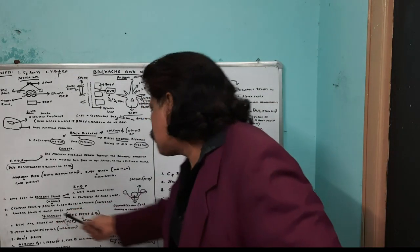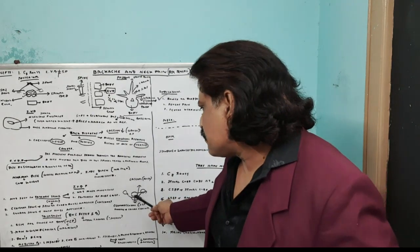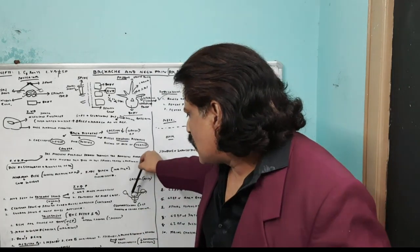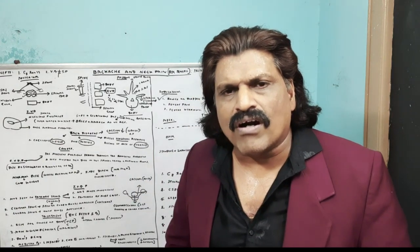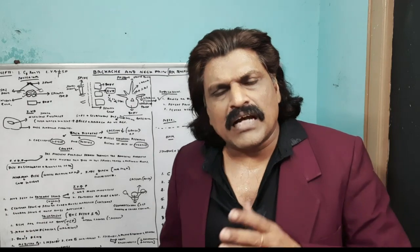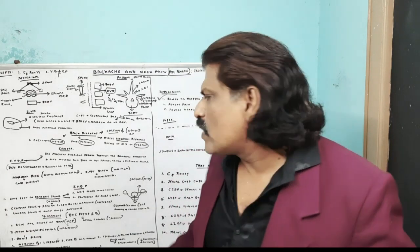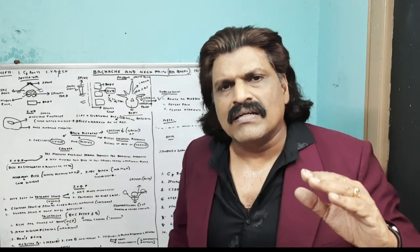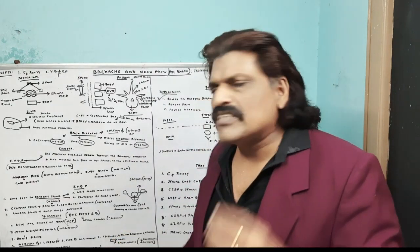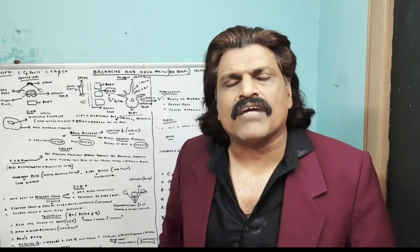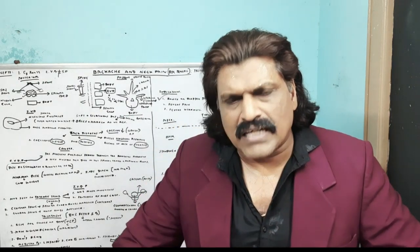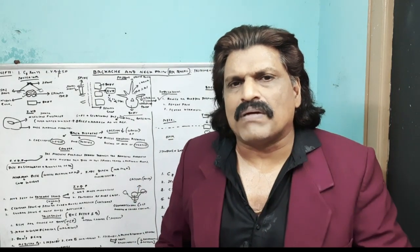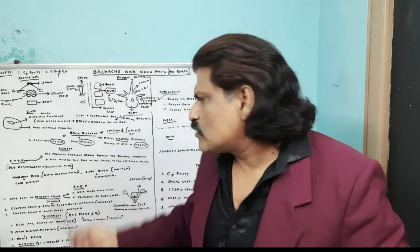In cervical disc prolapse, lateral impingement causes cervical radiculopathy; central impingement causes myelopathy; posterolateral or centrolateral causes myeloradiculopathy. In lumbar disc prolapse, since the spinal cord ends at L1 and disc prolapse is most common at L5-S1, only the roots are affected — the cauda equina. So lumbar disc prolapse causes only radiculopathy, while cervical disc prolapse can cause both radiculopathy and myelopathy.